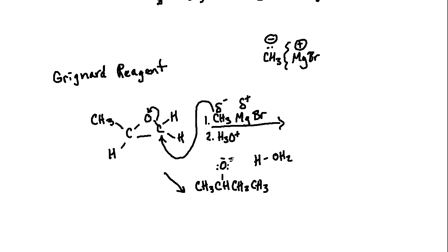Once the Grignard has successfully added, we end up grabbing an acidic proton from H3O plus. That will give electrons to the H2O to neutralize it, and we end up with the final product which would be CH3-CHOH-CH2 and now we've added another carbon functionality CH3. That would be a Grignard reaction for an epoxide opening.